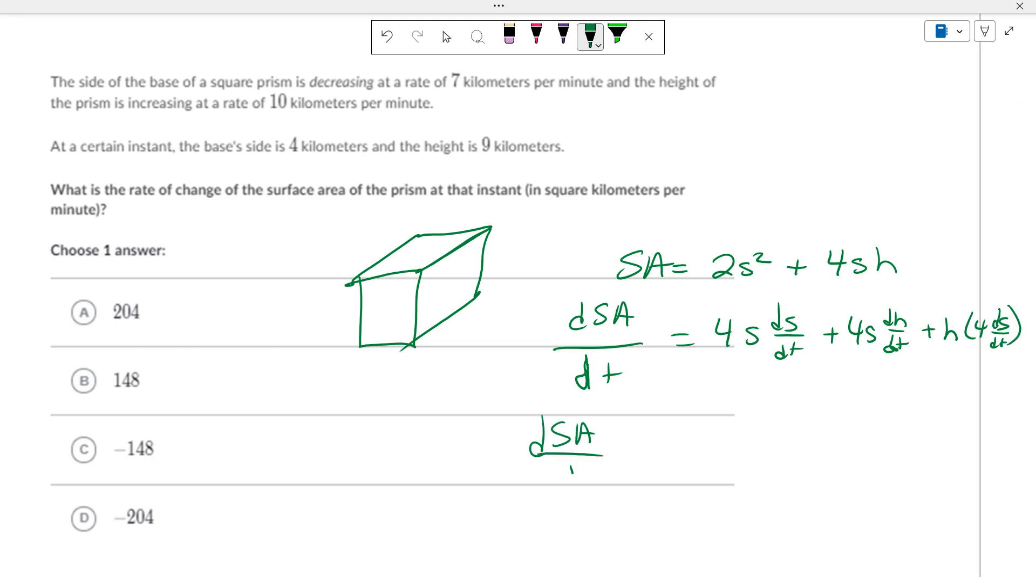So, dSA/dt equals 4. At a certain instance, the side is 4. The change of the side is a negative 7. 4 times 4. The change of the height is a positive 10. 10 plus 9 times 4 times 4 times the change of the side is a negative 7.